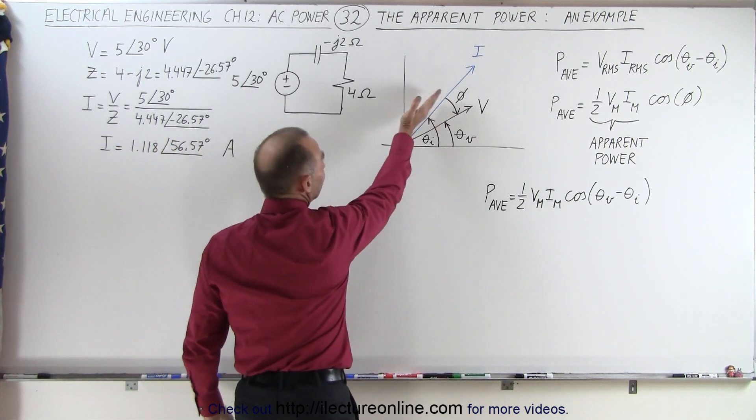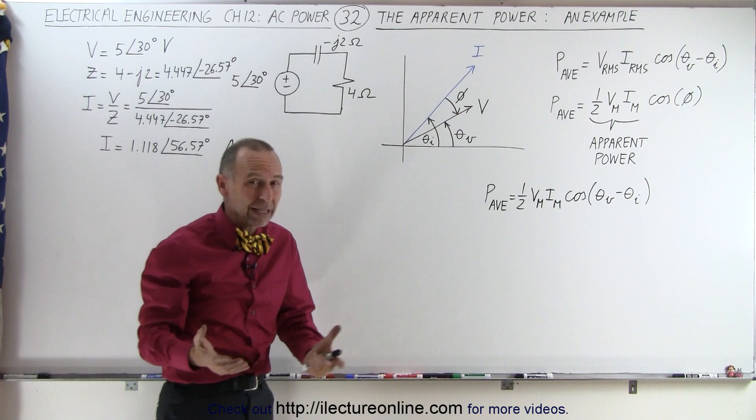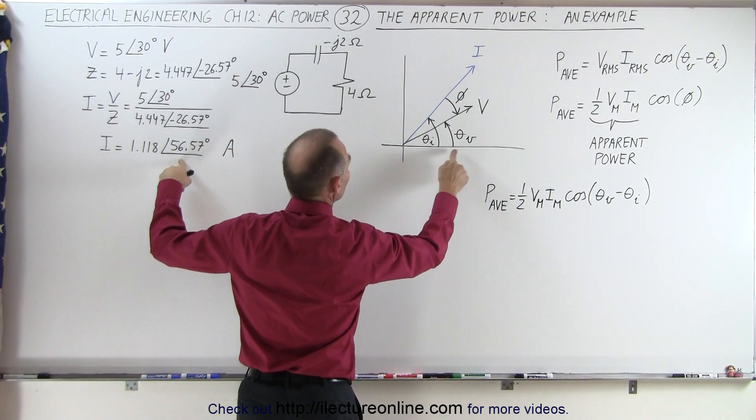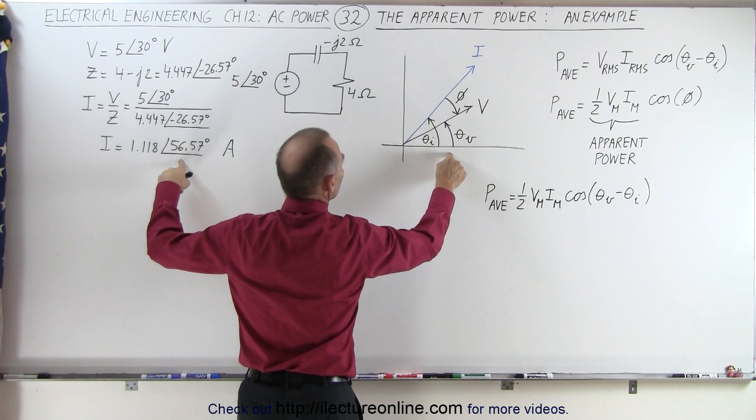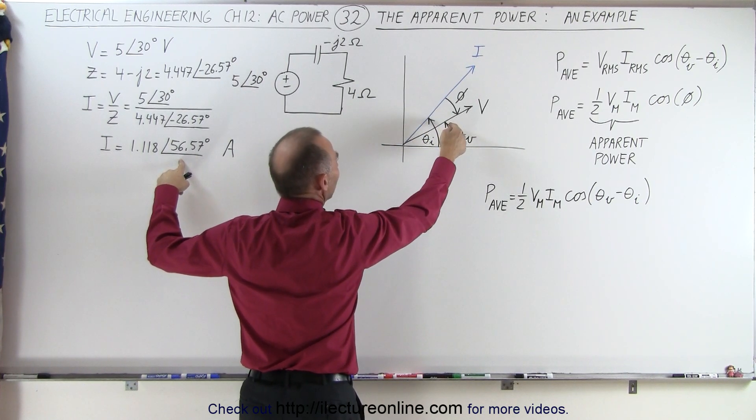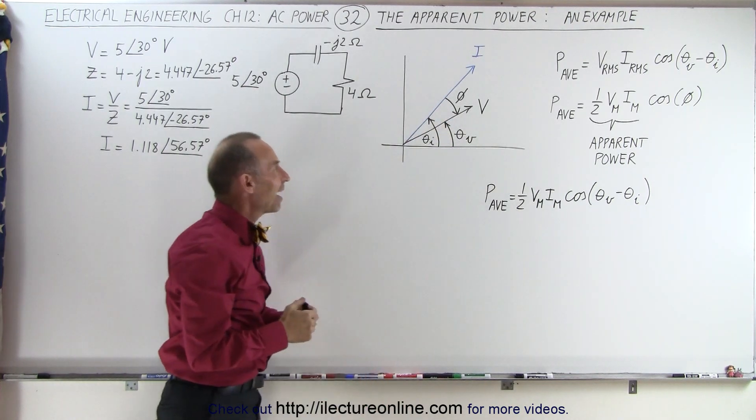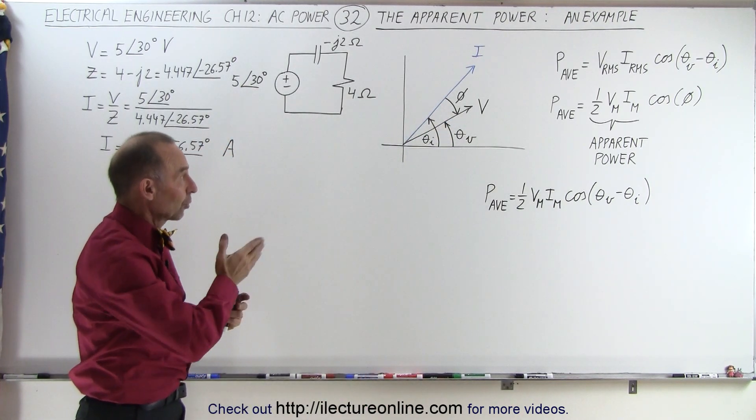Notice that the current leads the voltage, which is what you expect in a capacitor circuit. The phase angle for the current is 56.57 degrees, the phase angle for the voltage is 30 degrees. So the difference of the phase angle would be negative 26.57 degrees because the current leads the voltage.